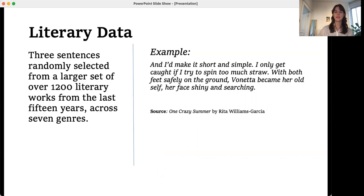To create our dataset, we first drew from a dataset curated by McGill's Text Lab of 1200 literary works published in English in the past 15 years, comprised of seven genres. We randomly selected three consecutive sentences as our passages. Here's an example of a three sentence passage from the novel One Crazy Summer.